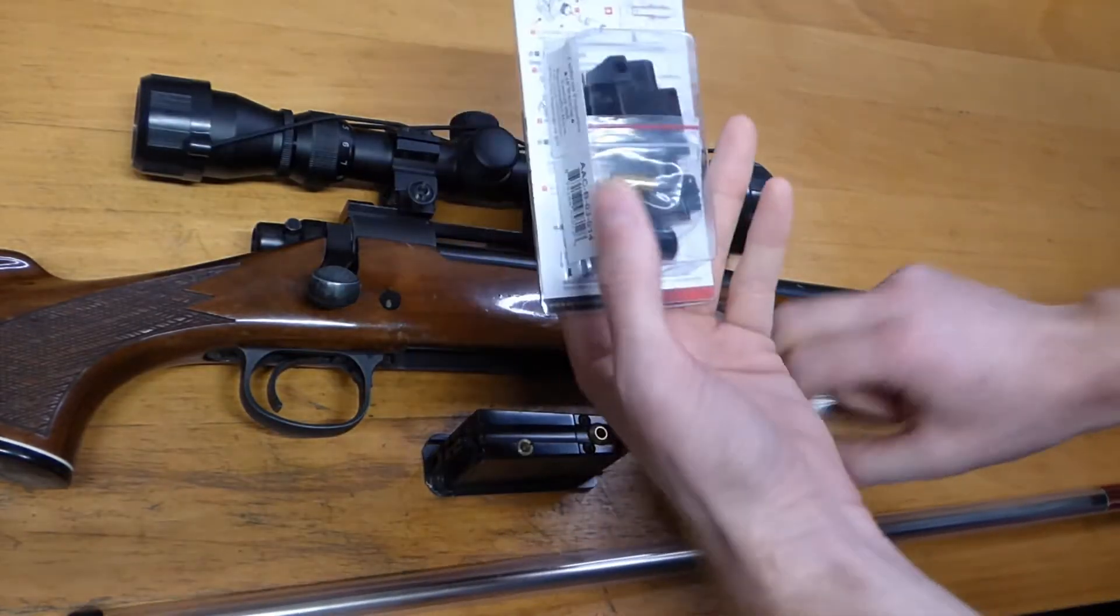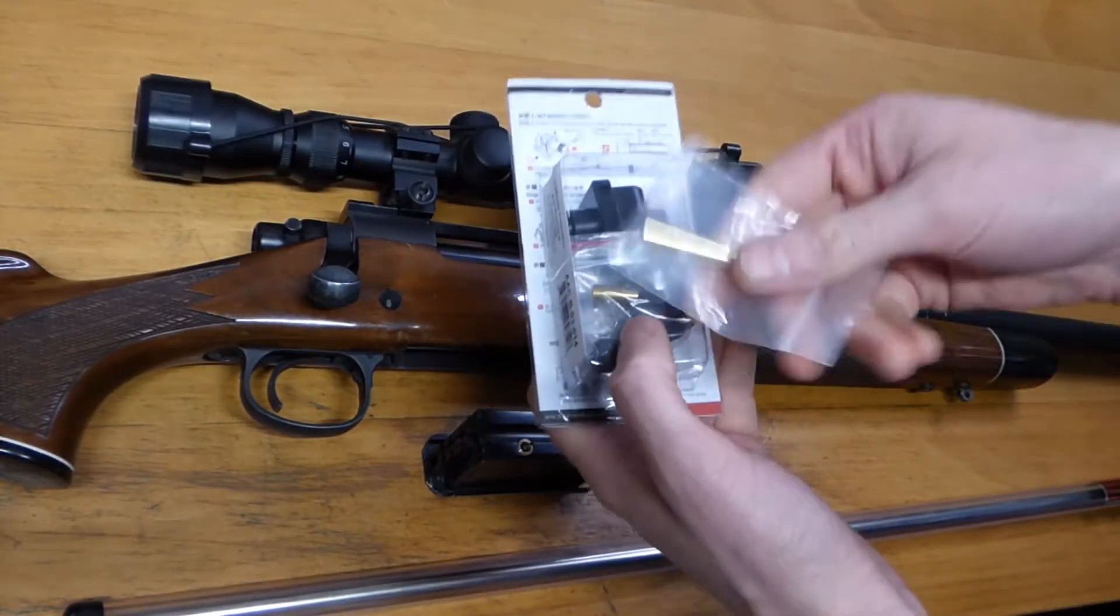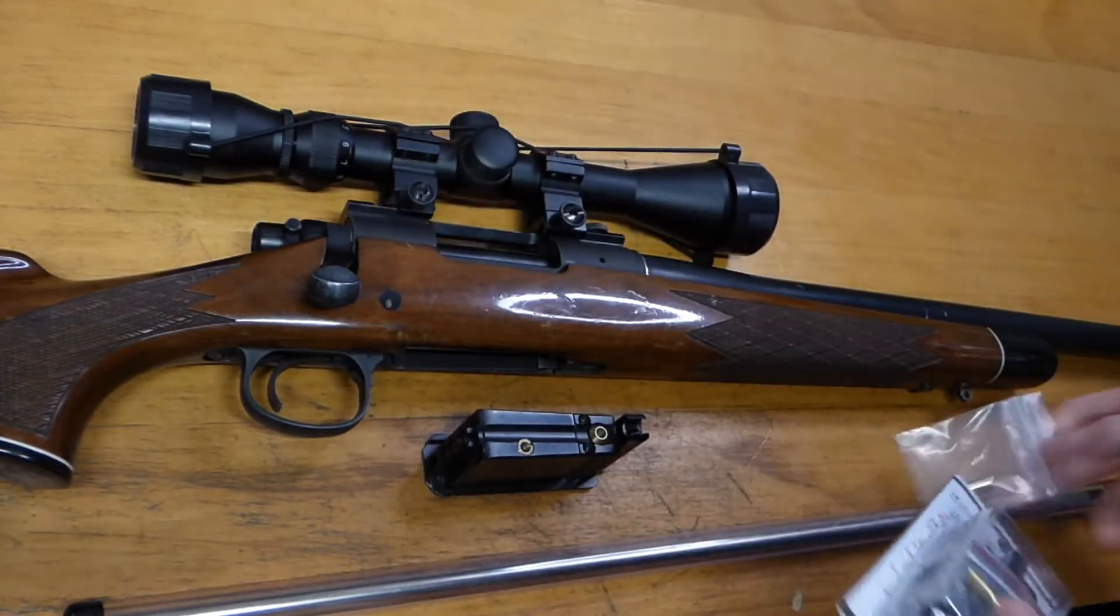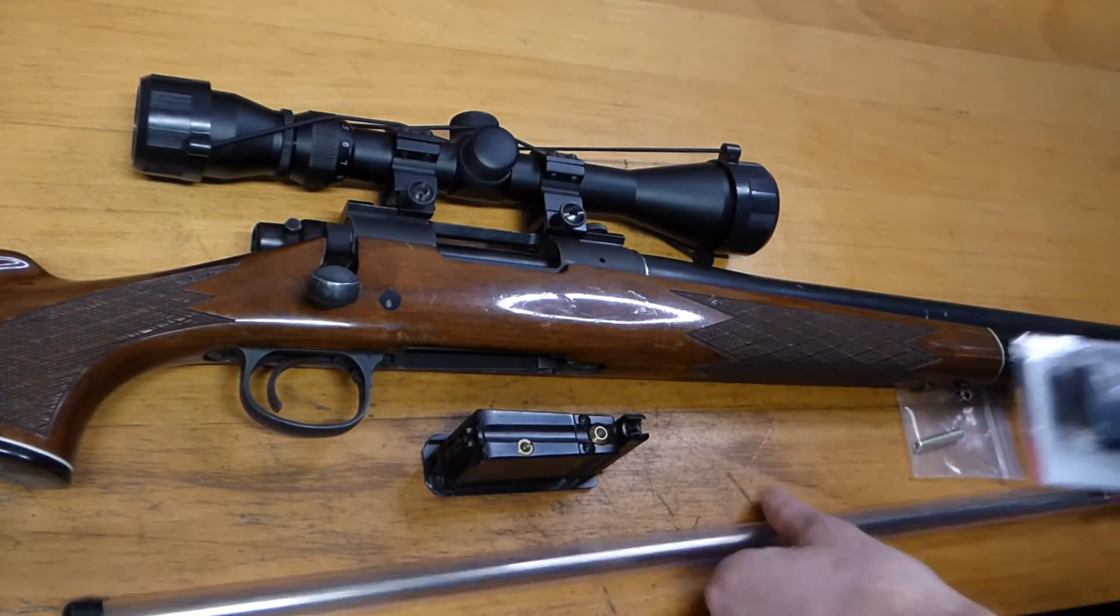And rather than using the nozzle extender that comes with the hop chamber, we've actually got a completely new replacement nozzle. So we've got a few parts that we're going to drop in this. So let's take it apart and get installing.